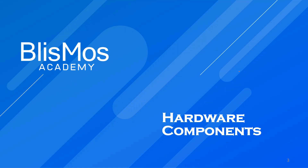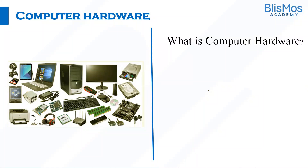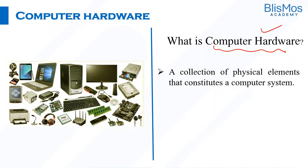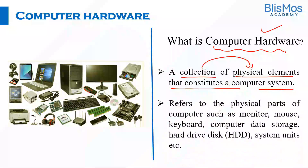Let us try to understand hardware components. What is computer hardware? Computer hardware is a collection of physical elements that constitutes a computer system. I am saying collection of physical elements where you can feel and touch them — that is computer hardware. It may refer to any physical parts like monitor, mouse, keyboard, hard drive, and many other units of the system.